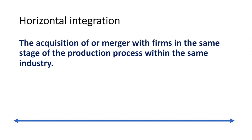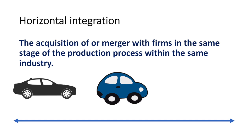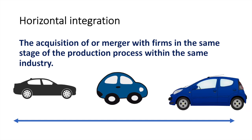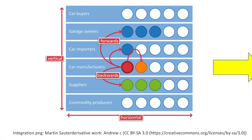Horizontal integration includes the acquisition of or merger with firms in the same stage of the production process within the same industry. For example, when an American car manufacturer acquires a Japanese car manufacturer — they are both in the same part of the production process and within the same industry. A firm may pursue such a strategy to increase its economies of scale as well as increase its market share.